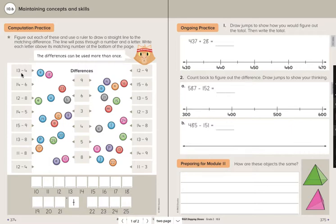I use the think addition strategy for that because I know 9 plus 4 more is 13. And I count it on. 9, 10, 11, 12, 13.